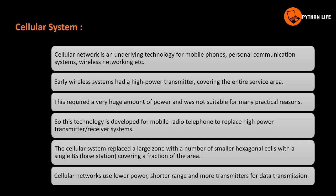Early wireless systems had a high power transmitter covering the entire service area. This required a very large amount of power and was not suitable for many practical reasons — the entire service area was covered by only one high power transmitter. That is why this technology evolved into the cellular system.